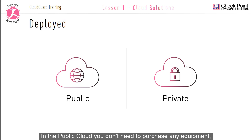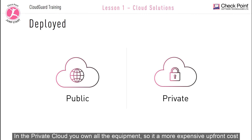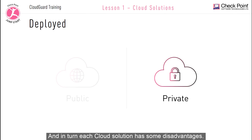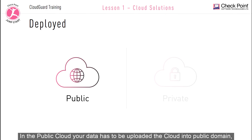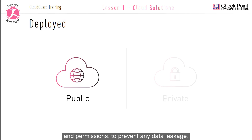In the public cloud you don't need to purchase any equipment, so it's cheaper to launch. In the private cloud you own all the equipment, so it's a more expensive upfront cost. However, each cloud solution also has some disadvantages. In a public cloud your data has to be uploaded into the public domain, so potentially it could be accessible by anyone.